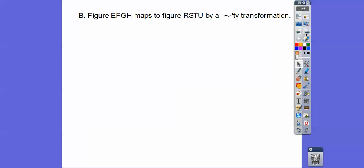So figure EFGH maps to figure RSTU by some sort of similarity transformation. This says, write a proportion that contains EF and RU. So EF is the first two letters. So the first two letters are R and S. So EF and RS are corresponding. So there's a ratio right here.